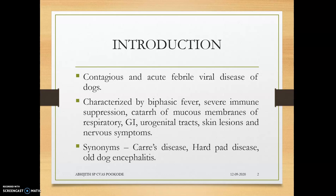The disease causes severe immune suppression, where immune cells are phagocytosed, leading to a decrease in the number of immune cells — lymphopenia. There is also inflammation of the mucous membranes of the respiratory tract, GI tract, urogenital tract, skin lesions, and serious neuronal manifestations. Synonyms of the disease are Carré's disease, hard pad disease, and old dog encephalitis.